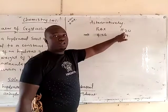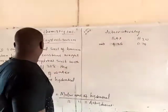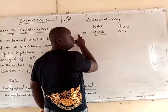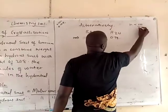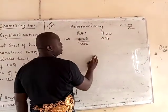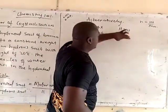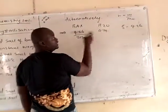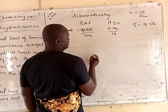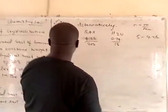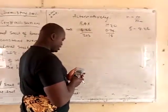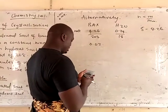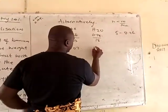Solving by mole-to-mole ratio: we have the salt and the water. For the anhydrous salt, the mass is 4.26 grams, and the molar mass is 208. The mass of water is 5 minus 4.26, which gives 0.74 grams, and the molar mass of water is 18. Dividing 4.26 by 208 gives 0.02 moles. Dividing 0.74 by 18 gives approximately 0.041 moles.